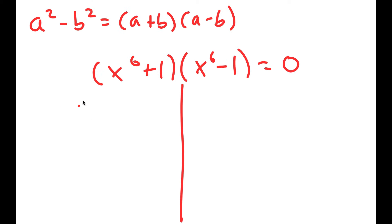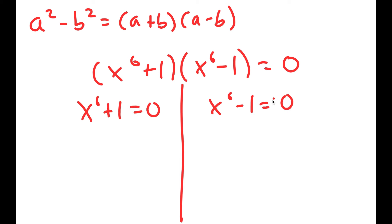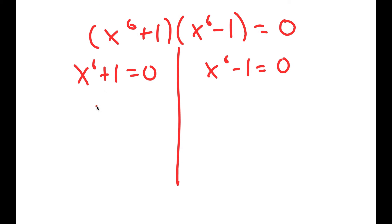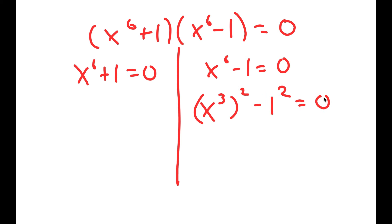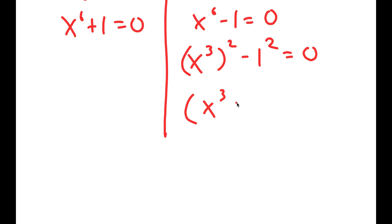This gives me two equations: x to the power of 6 plus 1 equals 0, and x to the power of 6 minus 1 equals 0. Now I'm going to do the same thing again — rewrite x to the power of 6 minus 1 equals 0 as x to the power of 3 squared minus 1 squared equals 0, and use the difference of squares property again to get x to the power of 3 plus 1 times x to the power of 3 minus 1 equals 0.